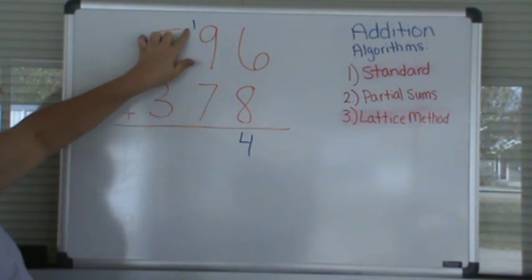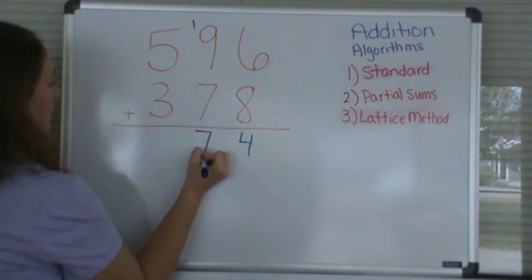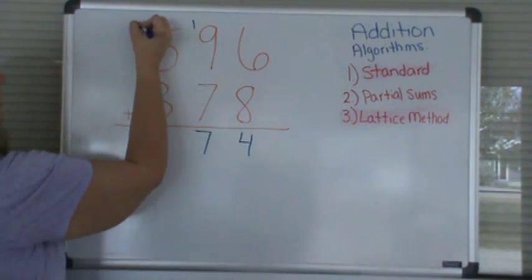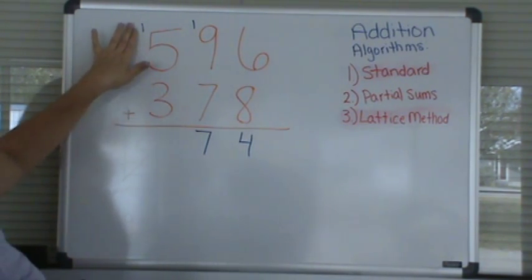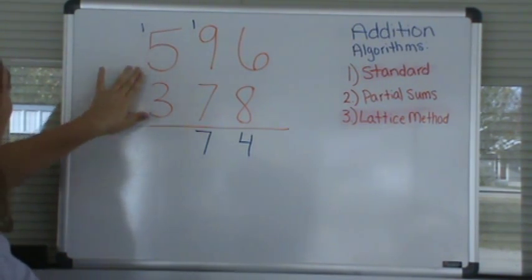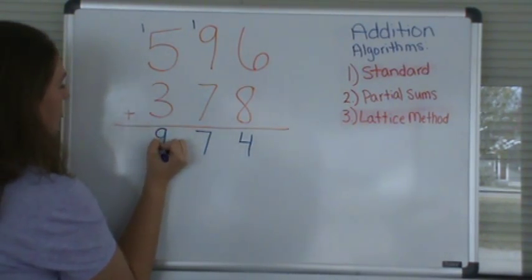9 plus 1 is 10, plus 7 is 17. So again we will record the 7 and carry our 1. 5 plus 1, getting a little ahead of myself, is 6. Plus 3 is 9. Thus we have 974.